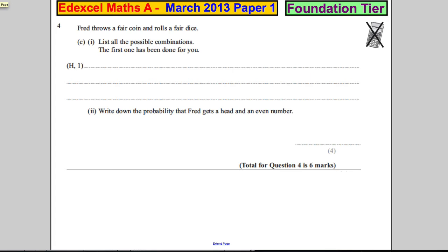The first one has been done for you. Well, it's quite simple. If he gets a head, he can get a one on the dice, or he could get a head and a two, or he could get a head and a three.